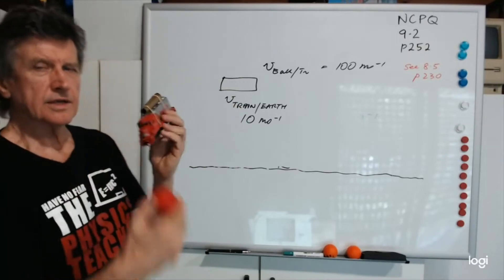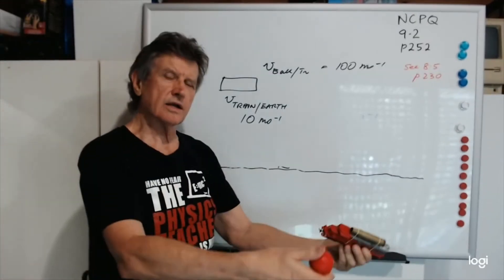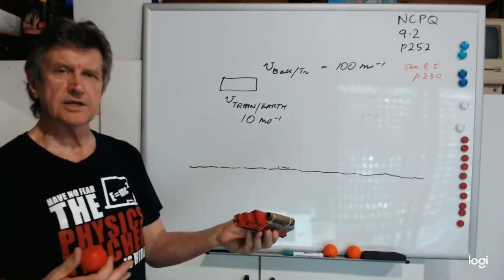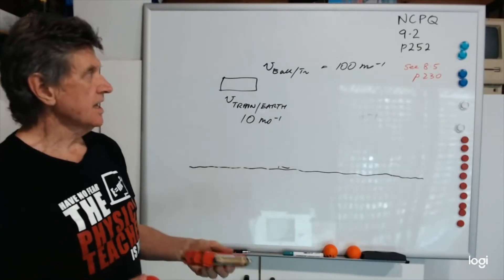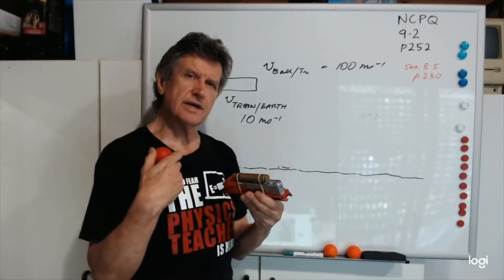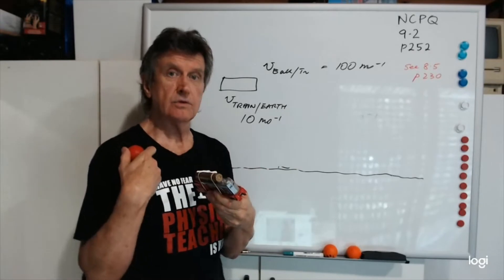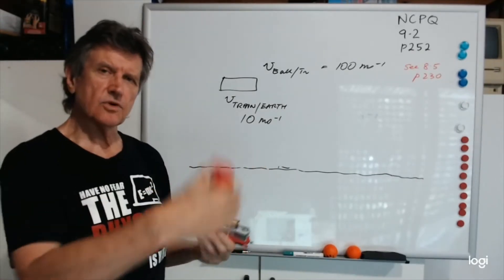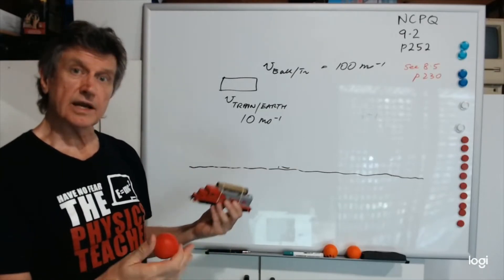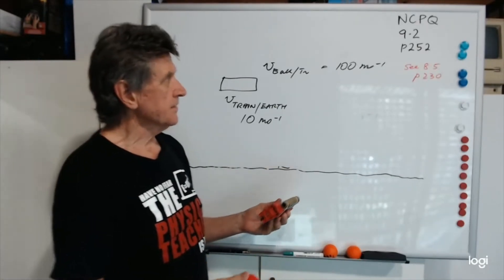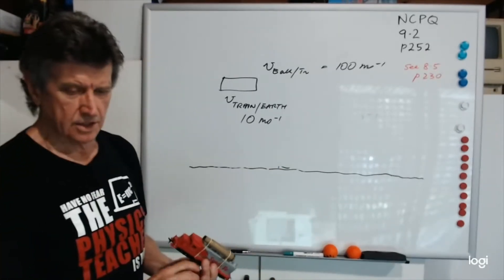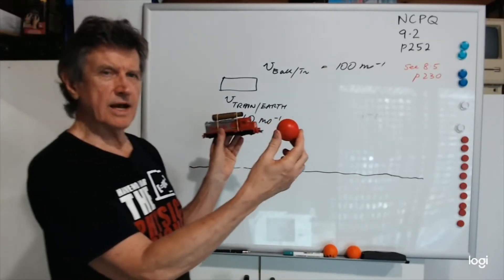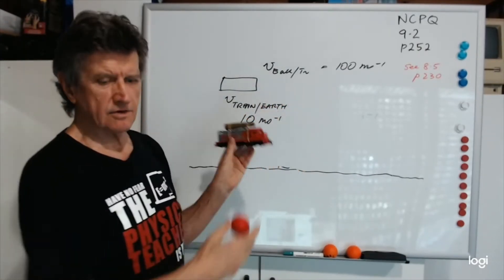It's like a cricketer delivering a ball. If the cricketer runs at 10 m/s and delivers the ball at 10 m/s relative to themselves, the total speed of the ball relative to the ground is 20 m/s. So for real objects with mass, you can just add the velocities together.